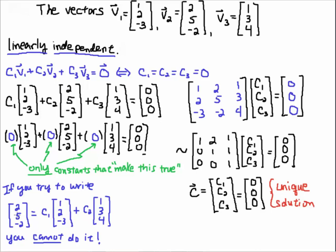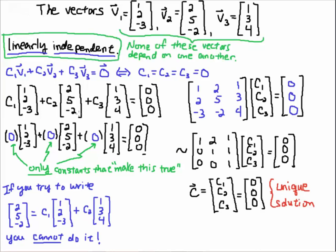That means this vector here — 2, 5, minus 2 — does not depend on these two vectors. They are independent. None of these vectors depend on each other, and that makes them linearly independent. And that comes from this definition here. Okay, good luck.